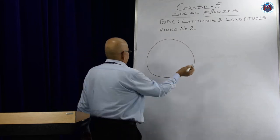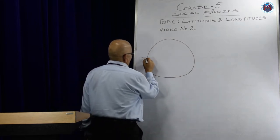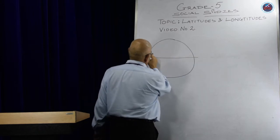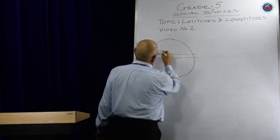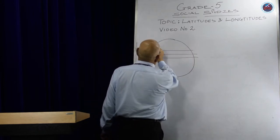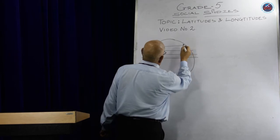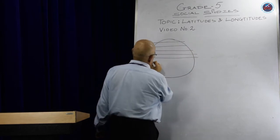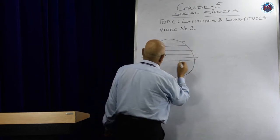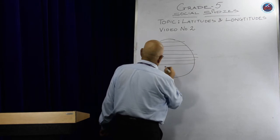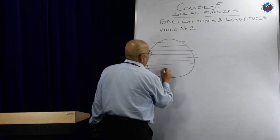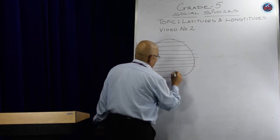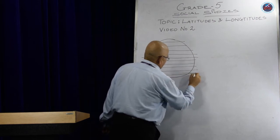Latitudes are horizontal lines which go right from the north to the south. They are parallel in nature.